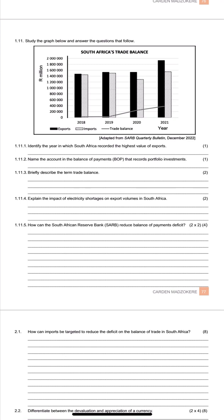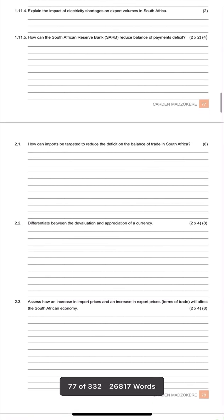That's the formula for South Africa. Other countries will not have gold separate because of its historical significance to the South African economy. Countries like Zimbabwe will not have that — their formula is simply merchandise exports minus merchandise imports. But for South Africa, you add your net gold because it's not part of merchandise exports — they separate it due to its historical significance.